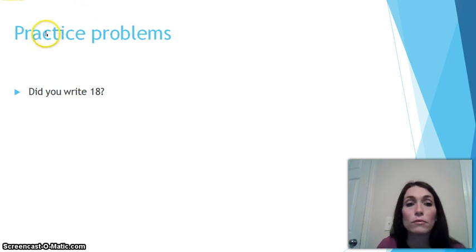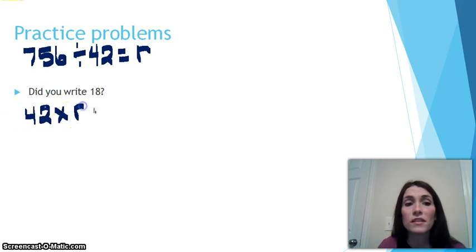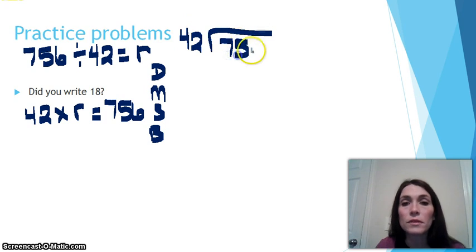Did you write 18? Let's take a look at a couple different ways that we could have written that problem. We could do 756 divided by 42 is equal to, and we could just use r for our variable like they did in the example, or we could do 42 times r is equal to 756. Again, let's do divide, multiply, subtract, and bring down to help us answer this problem using the standard algorithm. 42 is our divisor. We're dividing 756 by 42. We can't make any groups of 42 out of 7 things, so I need to look and see how many groups of 42 I can make out of 75. I can make 1.